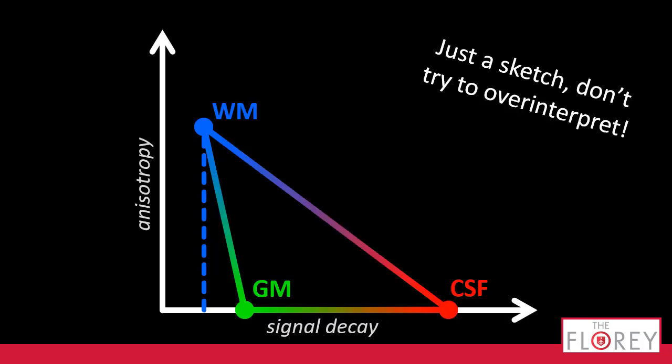Sketch — no over-interpretation, please. Don't all fly to the mic and ask me exactly what each point means. But if you imagine that all your signals in the brain, in all the voxels, lie within this anisotropy versus signal decay — or diffusivity, or whatever you wish to call it — plane, then trying to find response functions means basically trying to find this little triangle here, with the properties of each of these tissue types in the right spot. And we hope to find it such that most of the signals are in the triangle, because otherwise we do not fit them well.